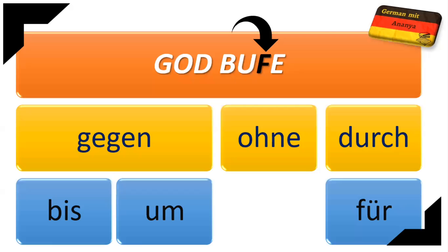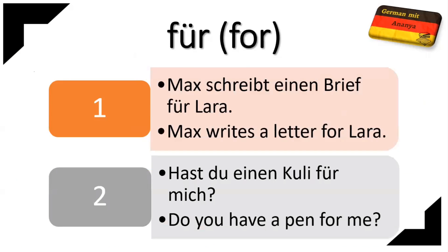The next preposition is F, which is für, and für means 'for.' For example: 'Max schreibt einen Brief für Lara' — Max writes a letter for Lara. Another example: 'Hast du einen Kuli für mich?' — Do you have a pen for me?